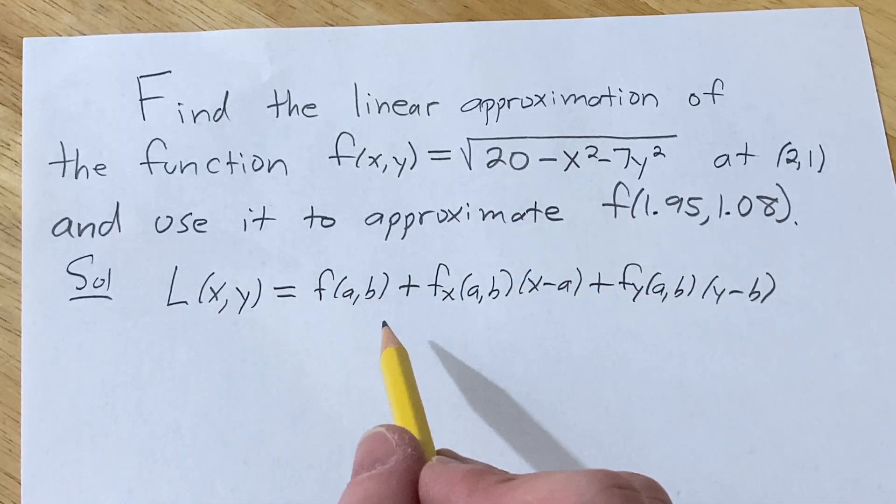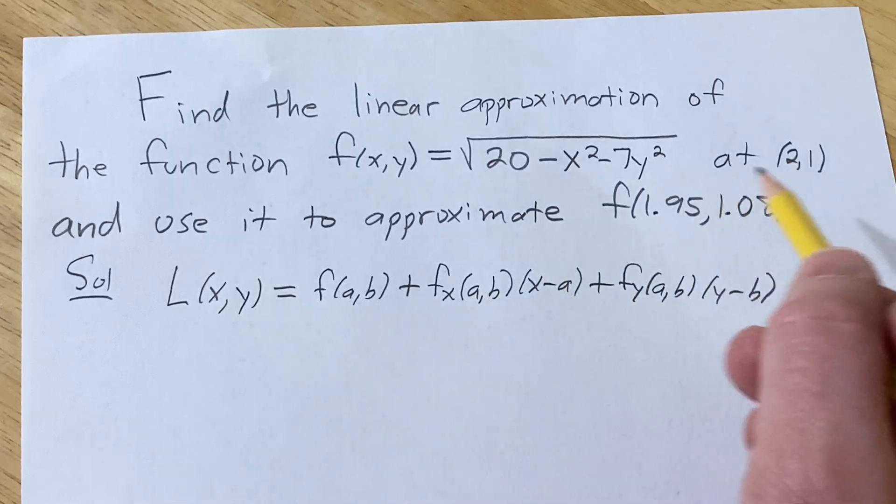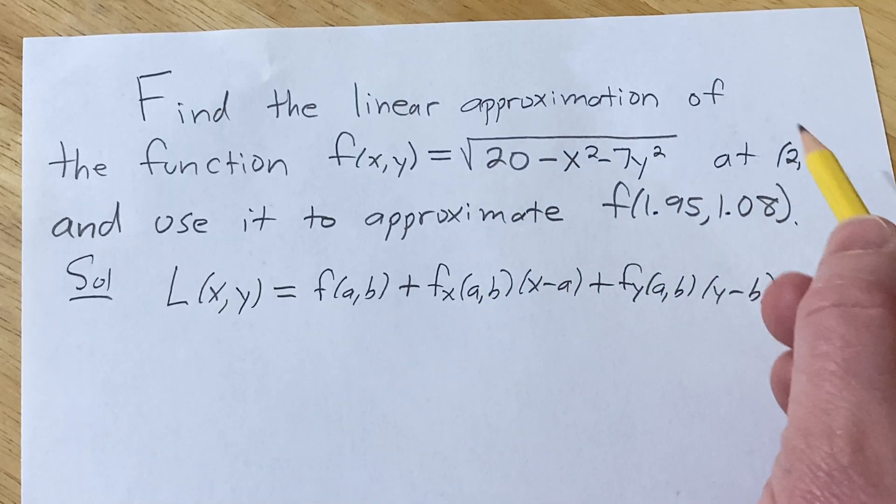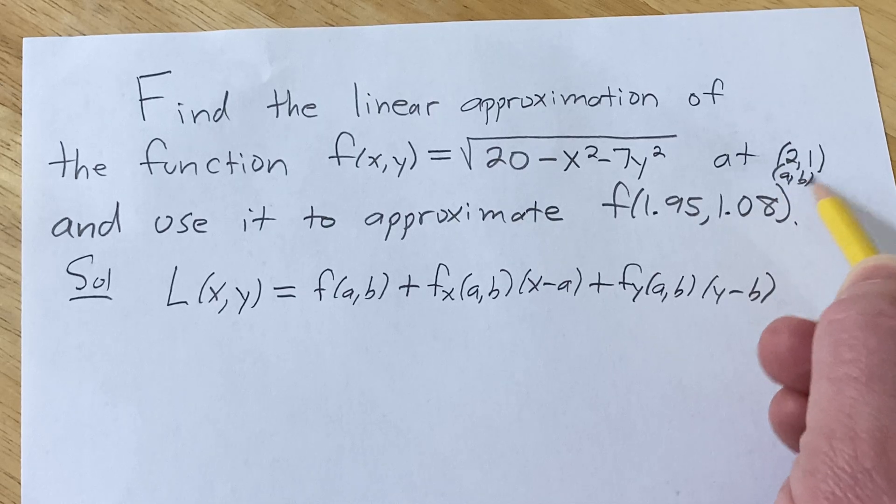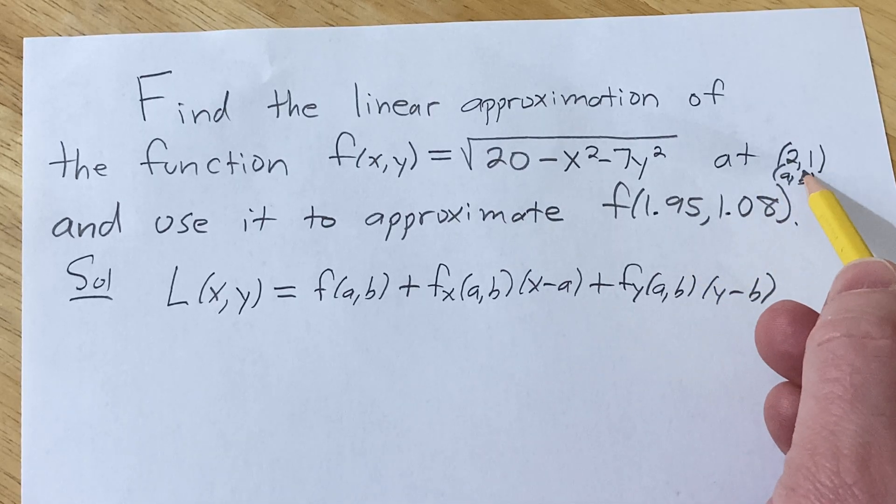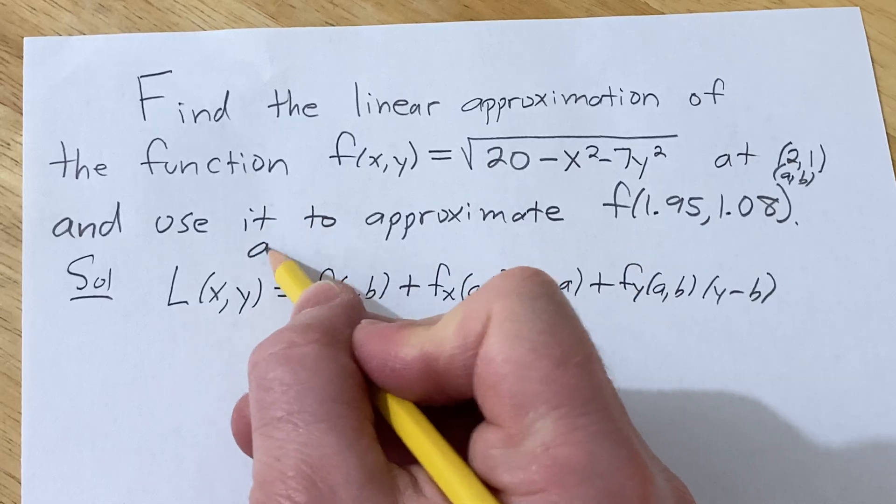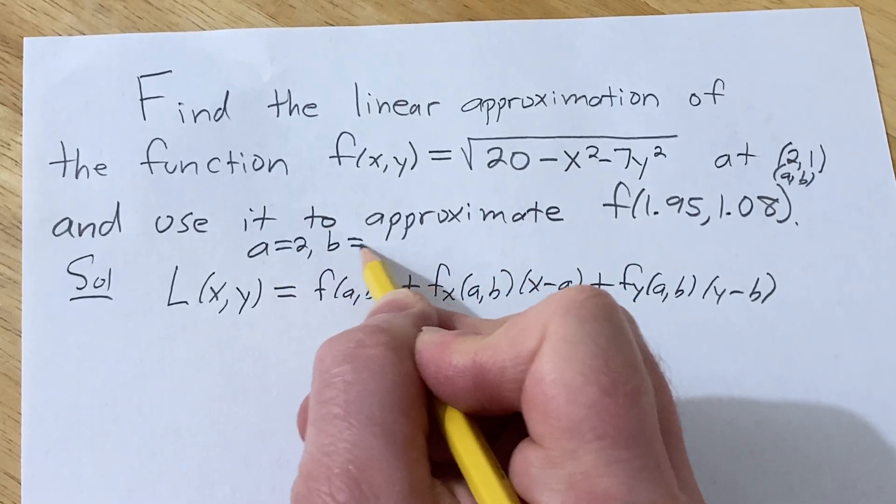So let's go ahead and start working out what we need. In our particular problem, our a and our b are going to be 2 and 1. So that's really important. It's not these numbers, a is 2 and b is 1.